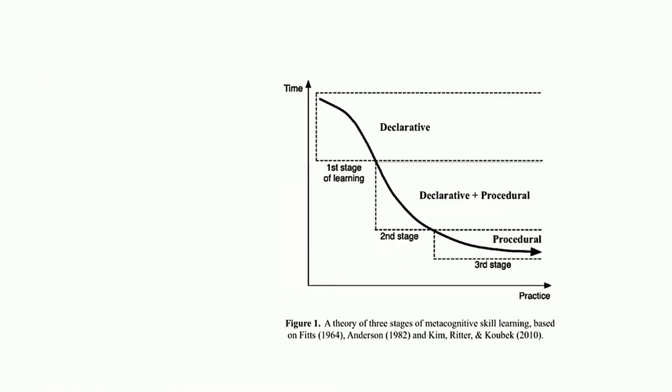We propose that metacognitive skill can be largely explained by a three-stage skill acquisition model as researched by Fitz and Posner and Anderson. In this model, performance develops from a novice stage to an expert stage, aided by proceduralization.